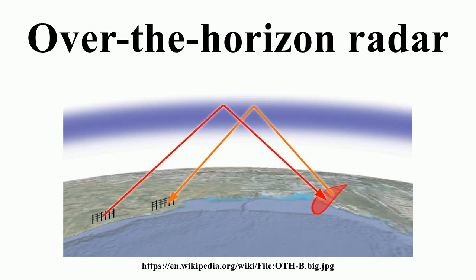Only one range of frequencies regularly exhibits this behavior: the high-frequency or short-wave part of the spectrum from 3 to 30 MHz. The correct frequency to use depends on the current conditions of the atmosphere and the sunspot cycle. So systems using ionospheric reflection typically employ real-time monitoring of the reception of back-scattered signals to continuously adjust the frequency of the transmitted signal.